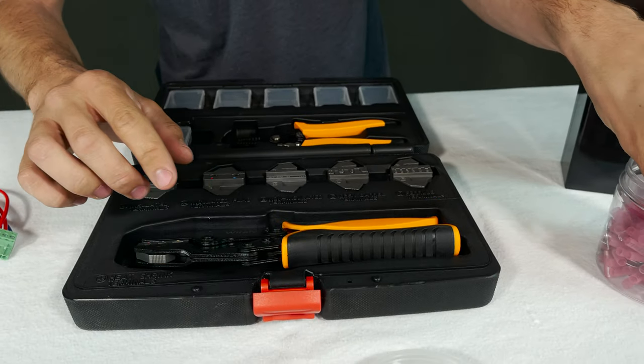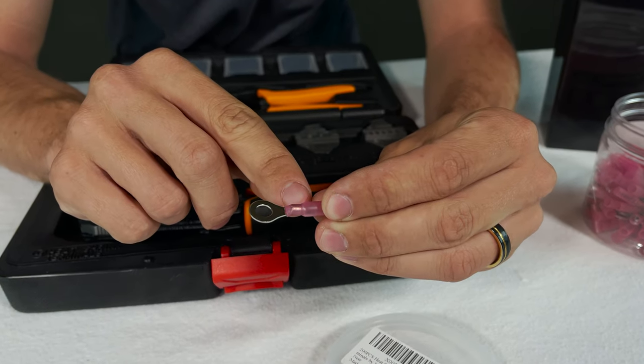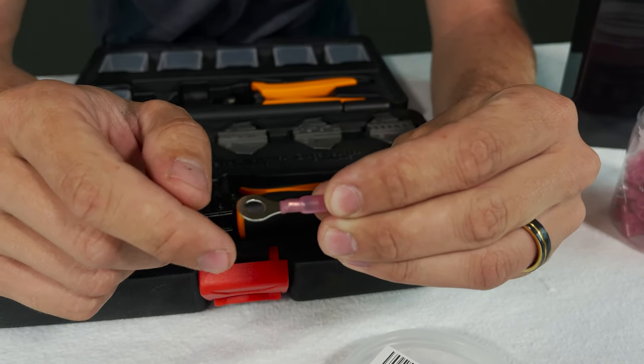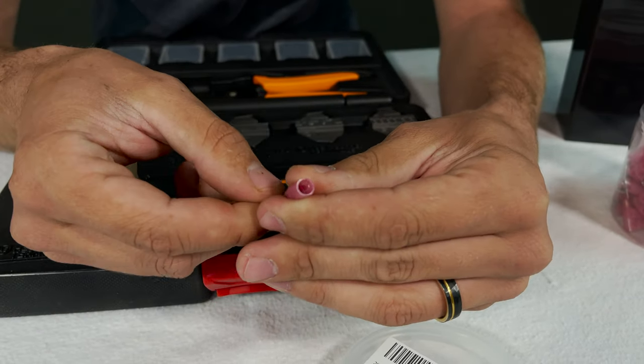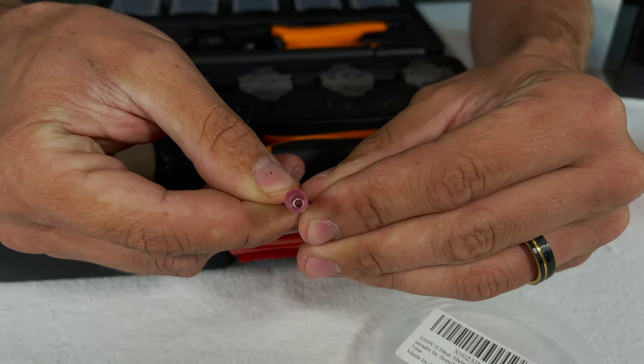So let's look at inside this crimp terminal. We have this heat shrink on the outside and that heat shrink is a little bit delicate and we need to get the wire in through the end of that terminal into that metal part that you can see there.